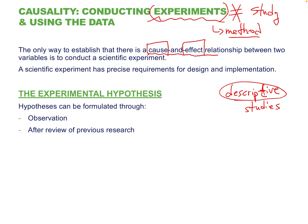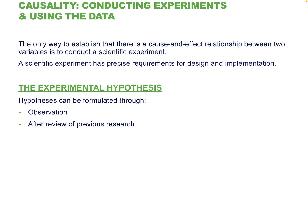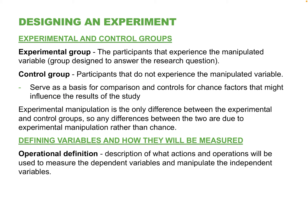Being able to say at the end of a study that something you introduced had a direct effect on what you're measuring — that's very powerful. It's much more powerful than a correlation, which basically says that when this happens, this also happens, but we weren't sure of the direction of causality. A scientific experiment allows us to establish that direction.